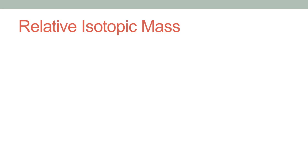Our next topic is relative isotopic mass, which is almost the same as relative atomic mass. The one difference is that instead of a simple element, we consider isotopes. A single element can have multiple isotopes, each with a different mass. For each individual isotope, we calculate its isotopic mass. For example, hydrogen has three isotopes with masses 1, 2, and 3 respectively — all different.